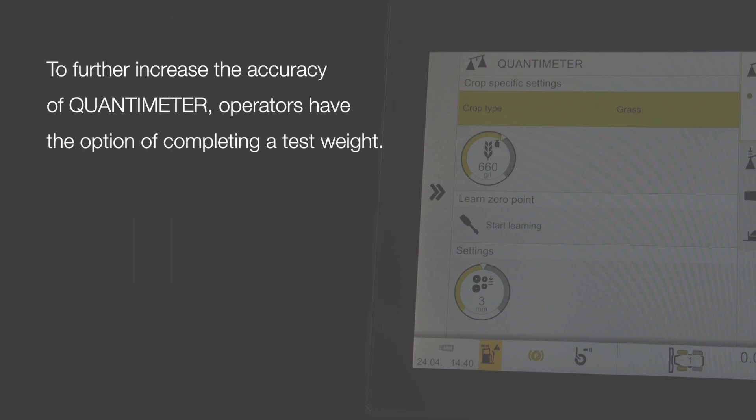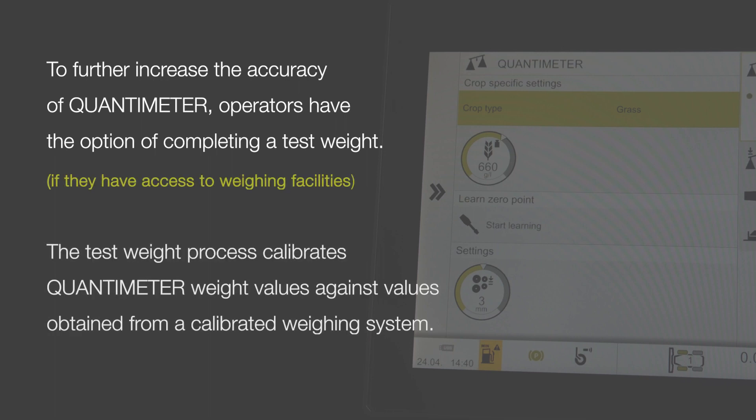To further increase the accuracy of Quantimeter, operators have the option of completing a test weight. The test weight process calibrates Quantimeter weight values against values obtained from a calibrated weighing system.